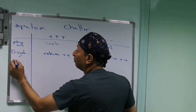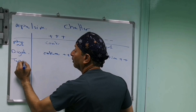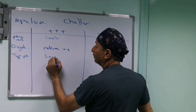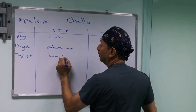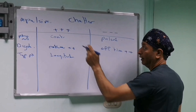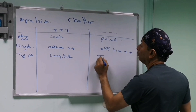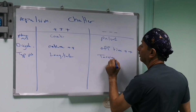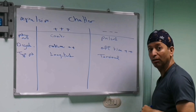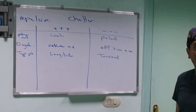The type of phaco also matters. If you're using longitudinal phaco, this will increase your shutter. If you use torsional phaco — if your machine will give you torsional phaco — this will decrease your shutter.